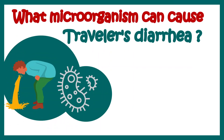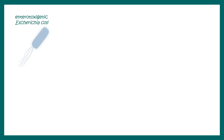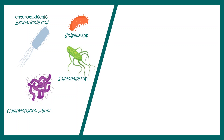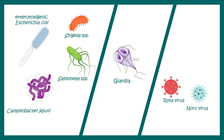The microorganisms responsible for traveler's diarrhea include enterotoxicogenic E. coli, Shigella, Salmonella species, Campylobacter jejuni, and others. It can also be caused by protozoa like Giardia, and viruses such as rotavirus and norovirus. Notably, apart from Shigella and Campylobacter, none of these organisms typically cause bloody diarrhea.